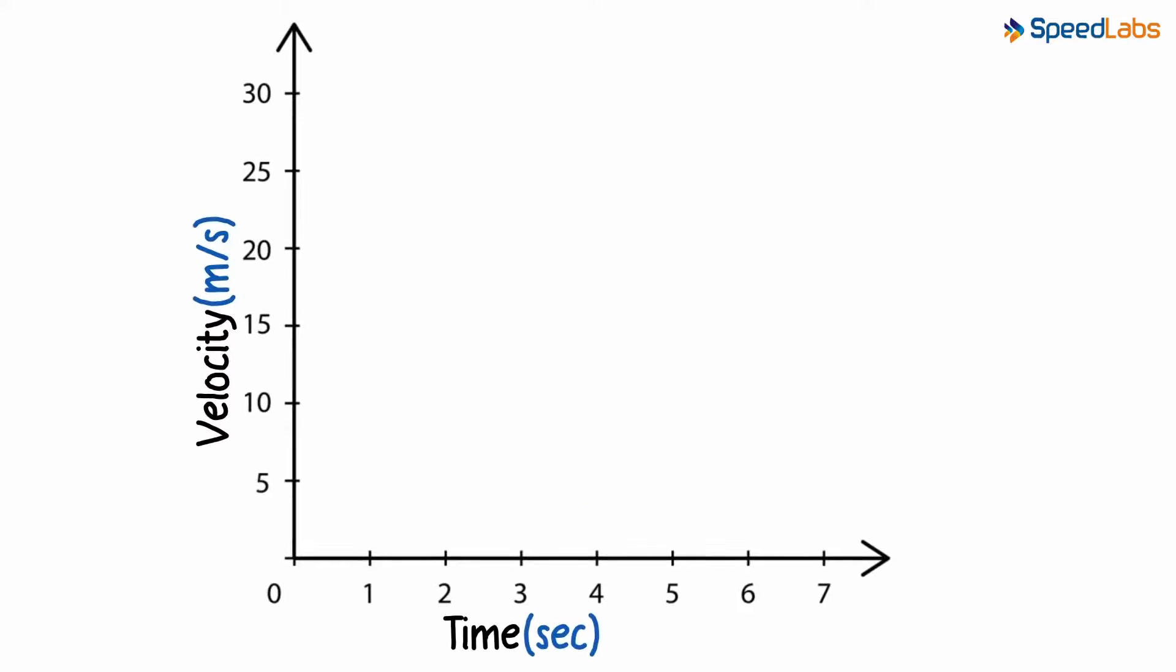In the previous part, we'd seen a velocity time graph in which the velocity was constant. But what if the velocity wasn't constant? How would the graph look?